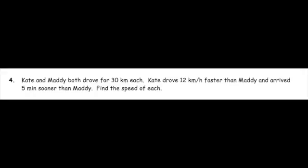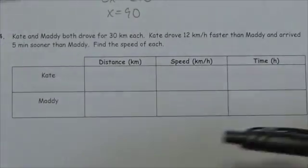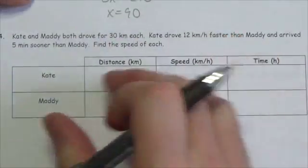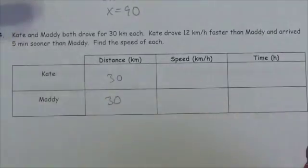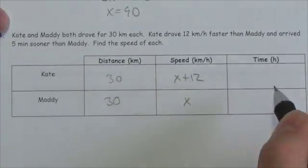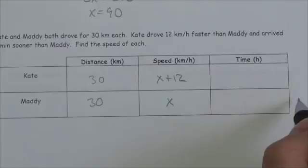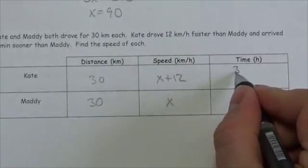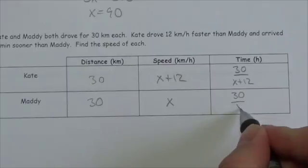Kate and Maddie both drove 30 kilometers each. Kate drove 12 kilometers per hour faster than Maddie and arrived five minutes sooner. Find the speed of each. The information needs adjustment — both travel 30 kilometers, and since Kate is 12 km/h faster, let Maddie's speed be x and Kate's be x plus 12. The five-minute difference is a comparison between times.